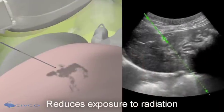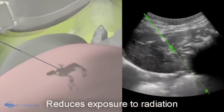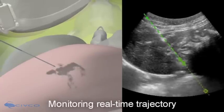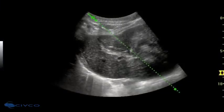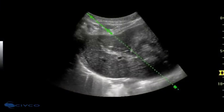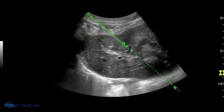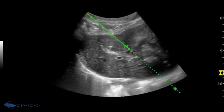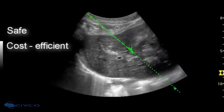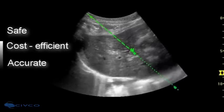Performing such procedures utilizing E-Trax and ultrasound reduces exposure to radiation. Monitoring real-time needle trajectory through delicate anatomy enables the user to target difficult-to-access lesions. As you can see, the location and orientation of the needle is clearly displayed, resulting in a safe and cost-efficient procedure with accurate targeting of lesions.